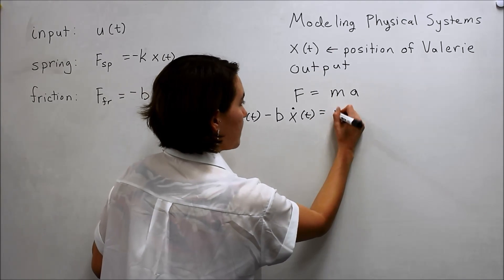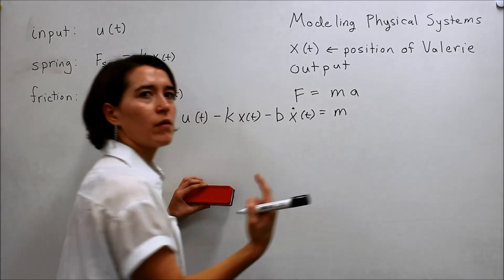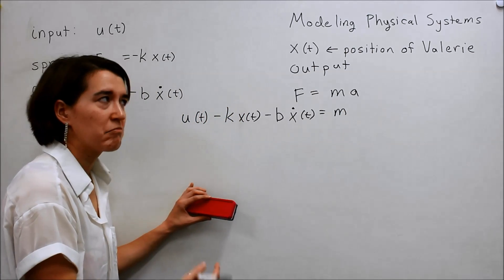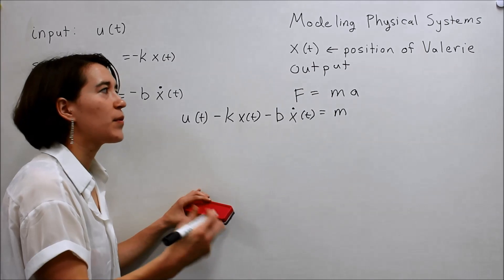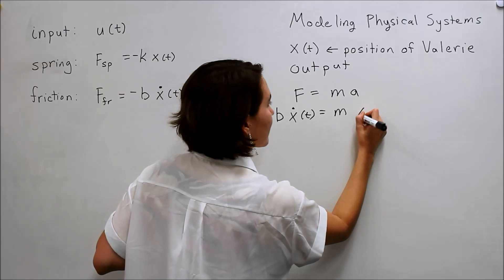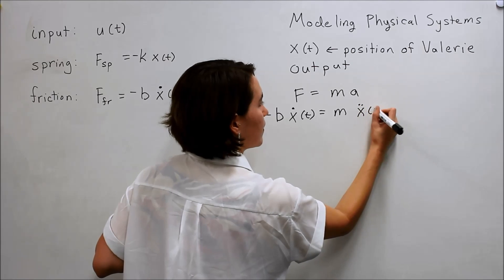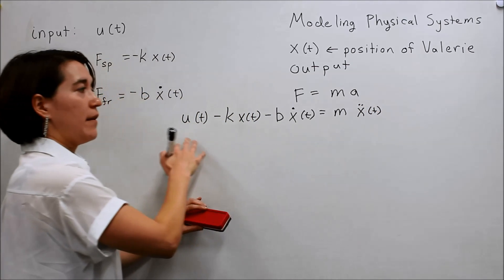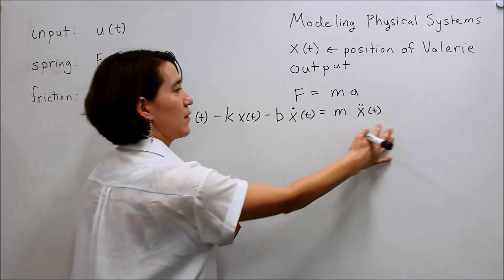We know m, but what about a? Well, a is the acceleration, which is the double derivative of the position. So we can rewrite a as x double dot of t. So now we have a very nice expression for our system in terms of our input u and our output x.